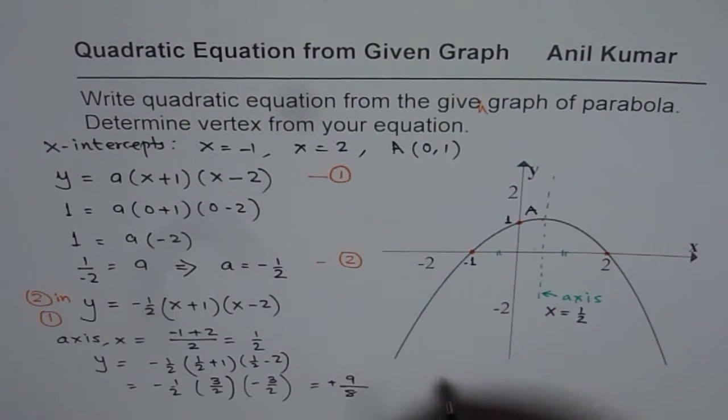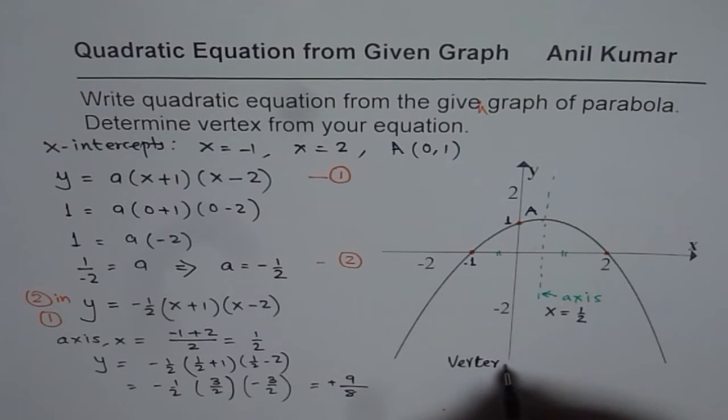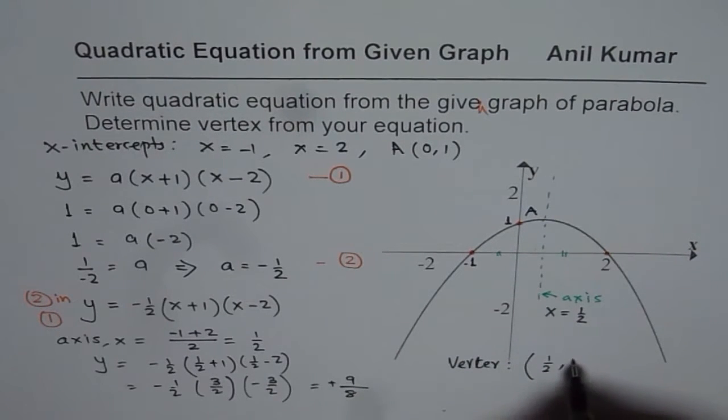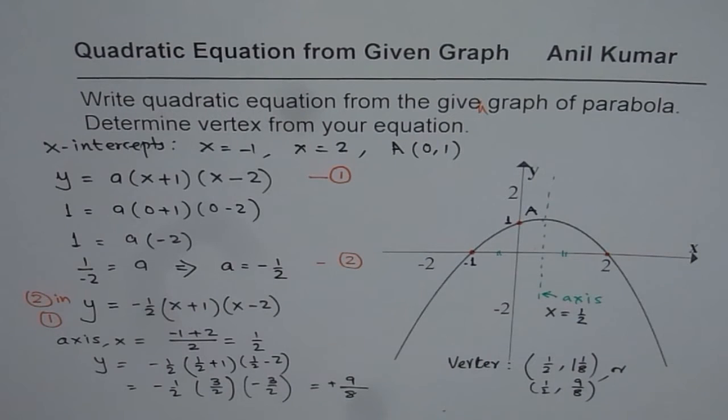So from here, we get the value of vertex is at x-value is half and y-value is one, one over eight. Or you could write nine over eight. Either way, you could also write or, let me write half nine over eight as you wish. So that is how you can find vertex from the given equation in factored form.